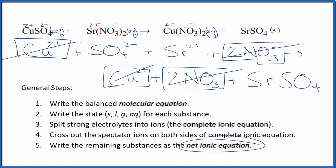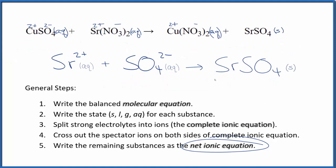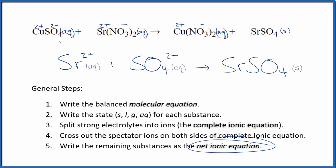And what's left, that's the net ionic equation for CuSO4 plus Sr(NO3)2. I'll clean this up. So this is the balanced net ionic equation for CuSO4 plus Sr(NO3)2, copper sulfate and strontium nitrate.